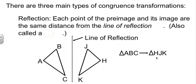So our transformation would be written like this. Triangle ABC maps onto, that's what this arrow means, maps onto triangle HJK. Notice A matches H, and so forth.